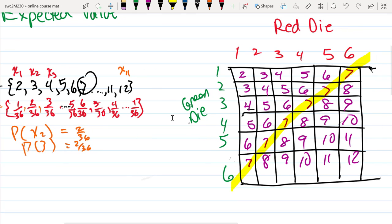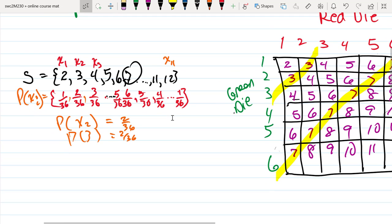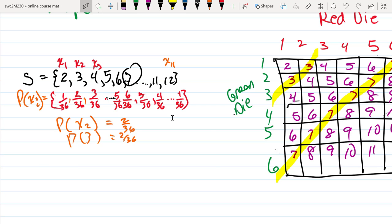The proportion of times we see a sum of 3 can be easily determined by looking at our table. It occurred two out of 36 possibilities, and 7 is the most frequently occurring value with the highest proportion and highest probability. What we have here is a probability distribution table.